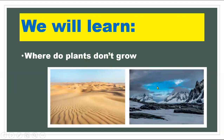Now look at the other picture. In this picture you cannot see any plant — the plants cannot grow in this habitat. Why? Because it is too cold for the plants. This is an icy, cold place. So the desert is very hot and this icy place is very cold for the plants, so plants cannot grow in either.